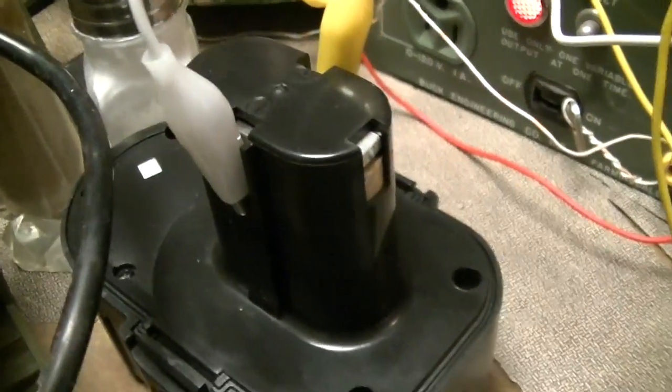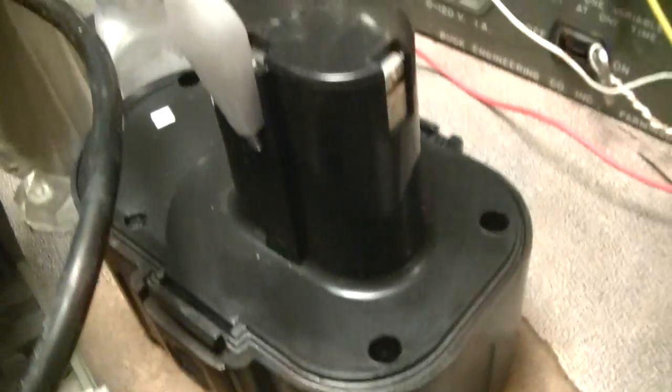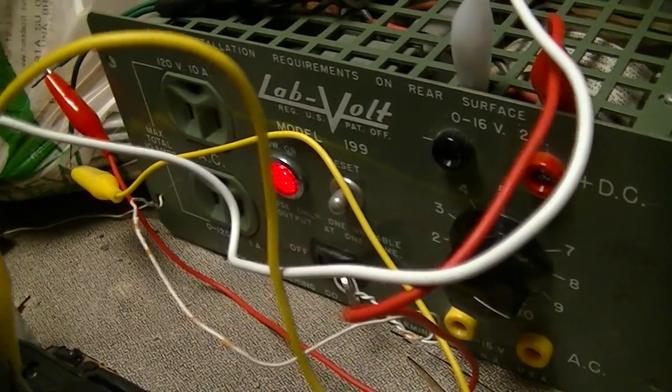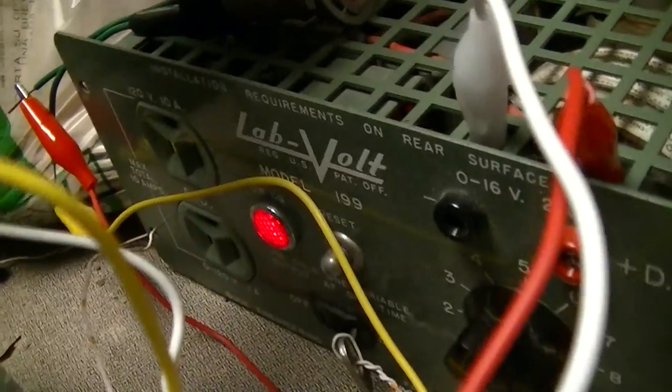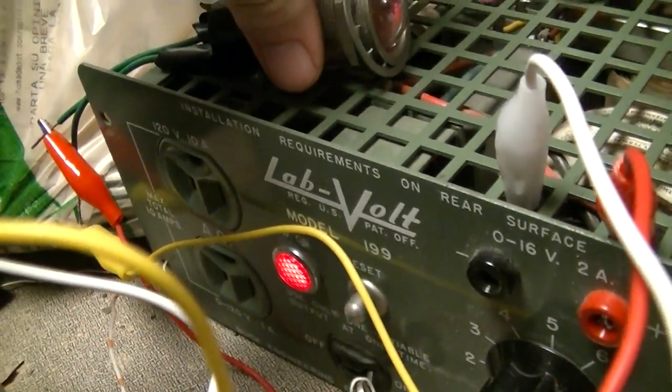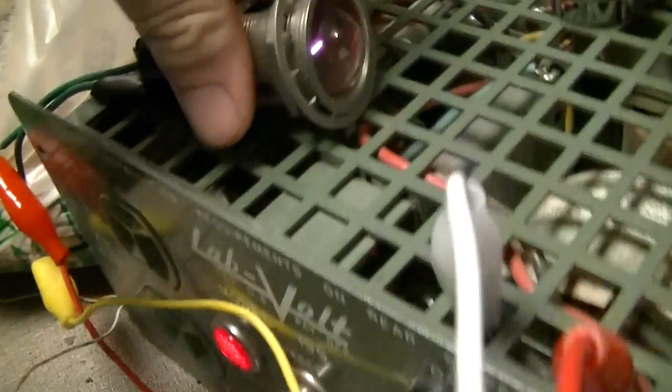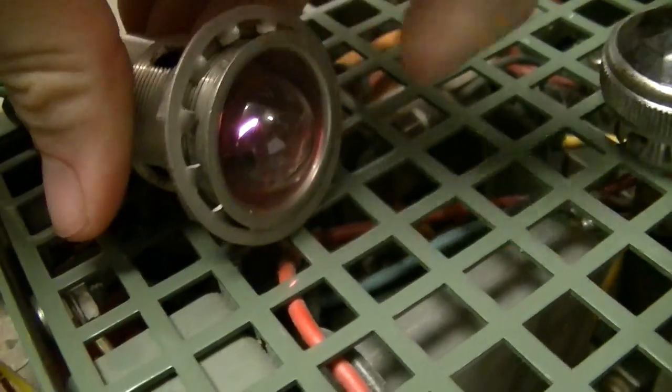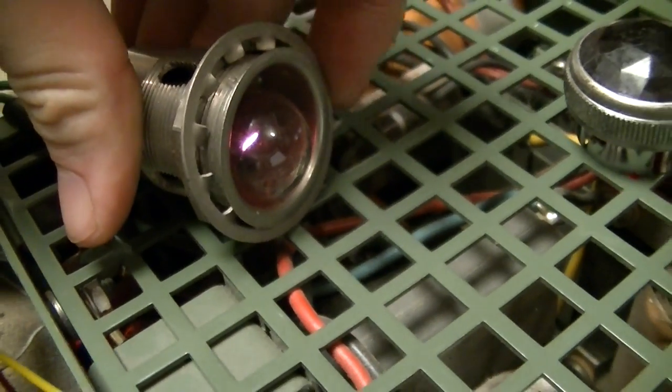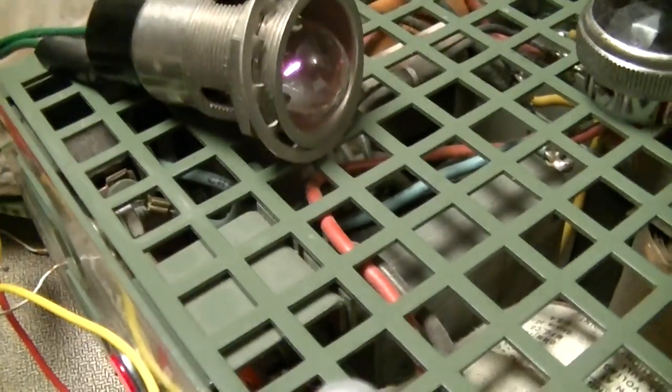By the way, this humming is I'm just charging this 14.4 volt drill battery that I rebuilt with one of my bench supplies, a 1970 vintage Lab-Volt Model 199. This 6 watt 6 volt 6S6 indicator lamp is just serving as current limiting.